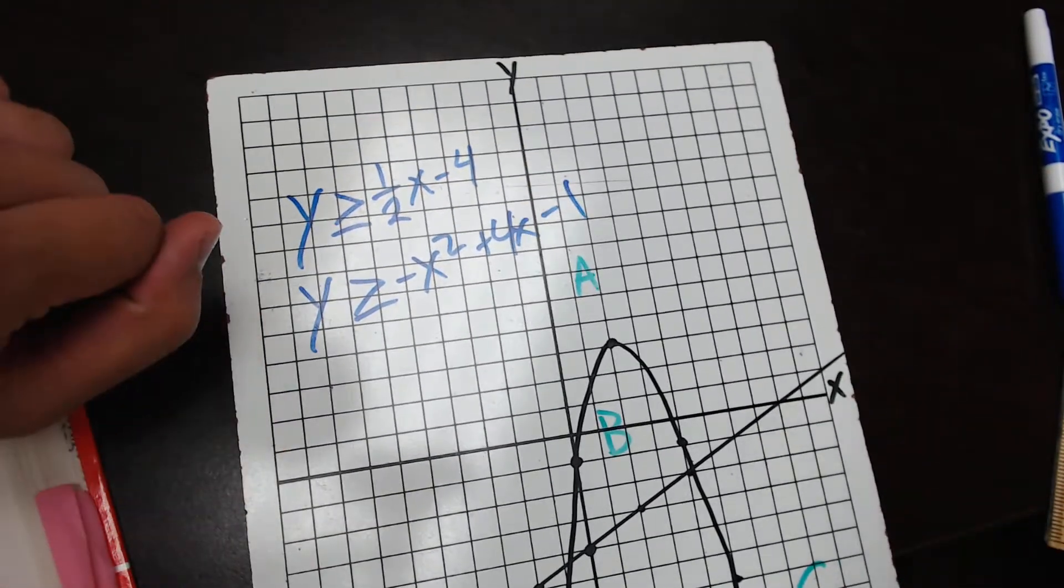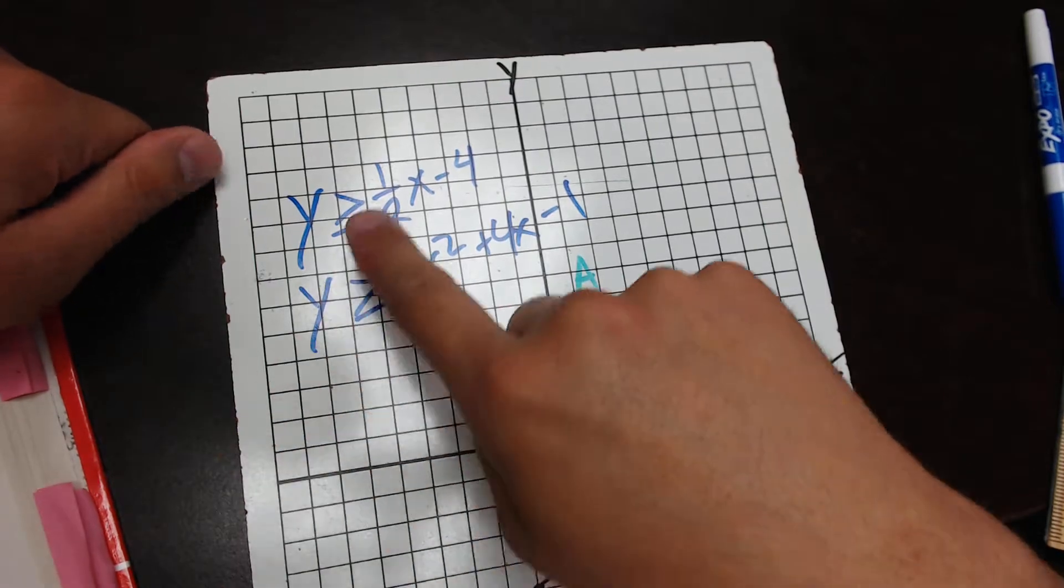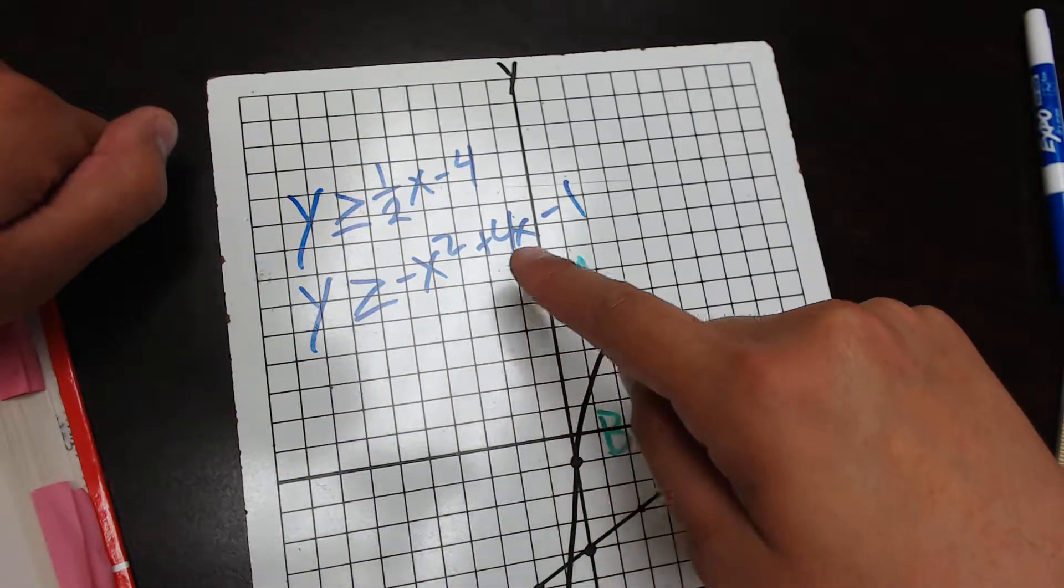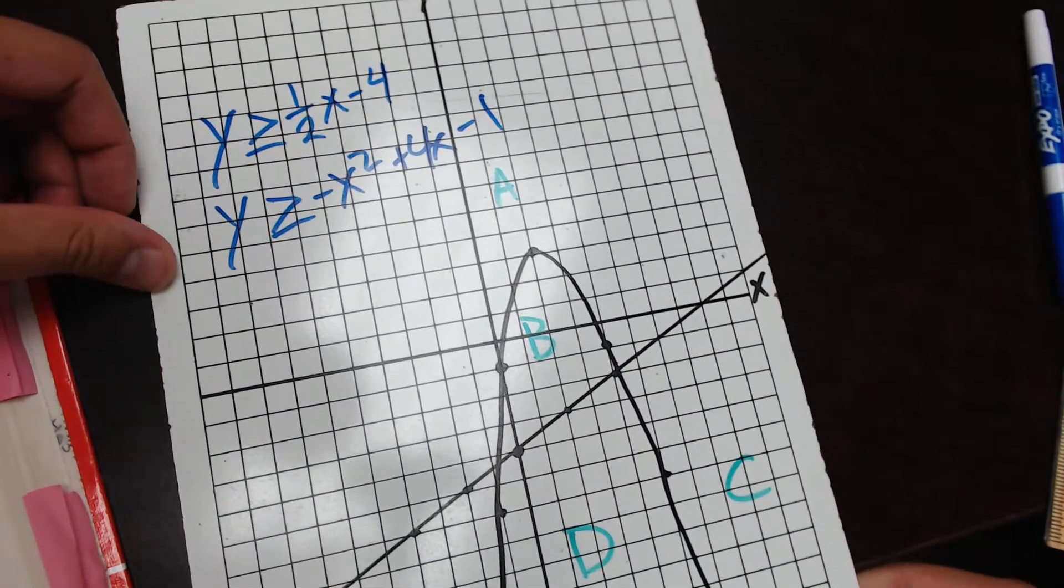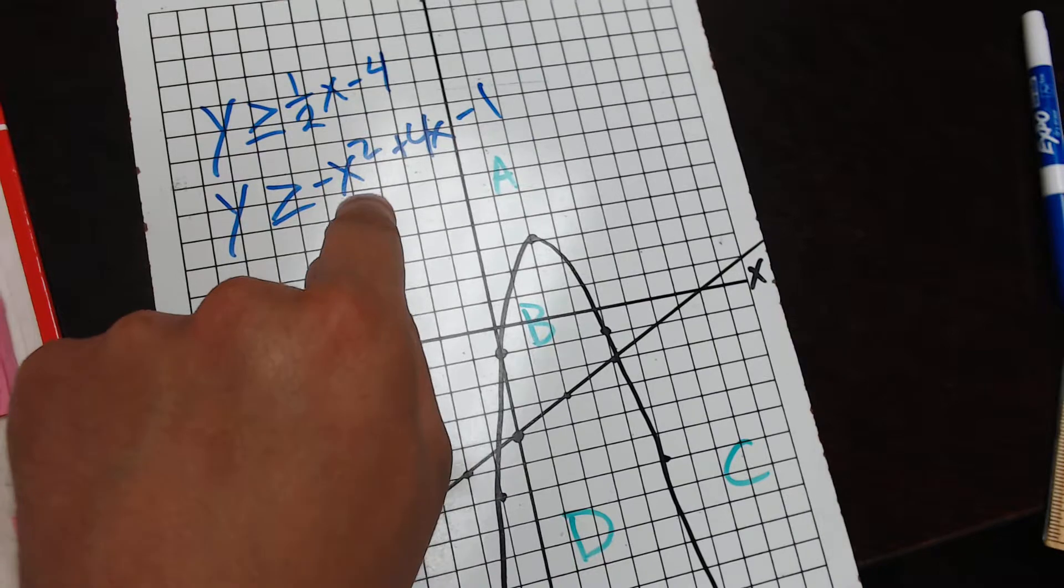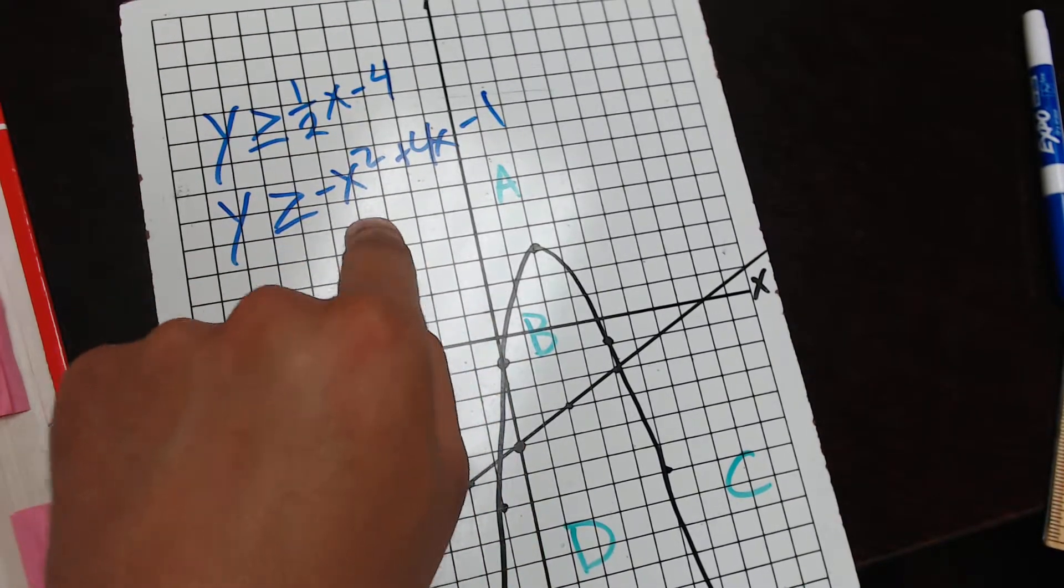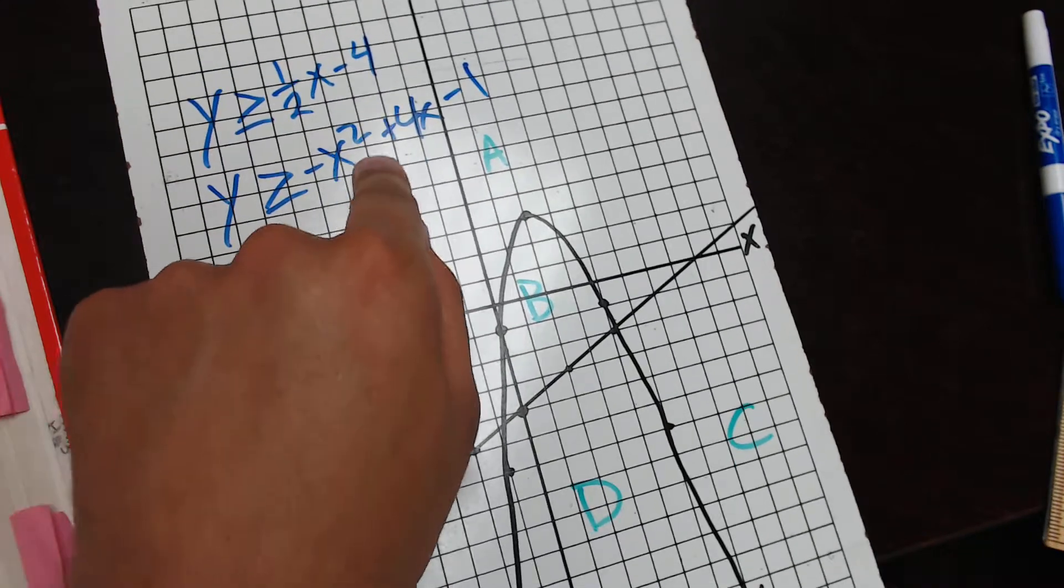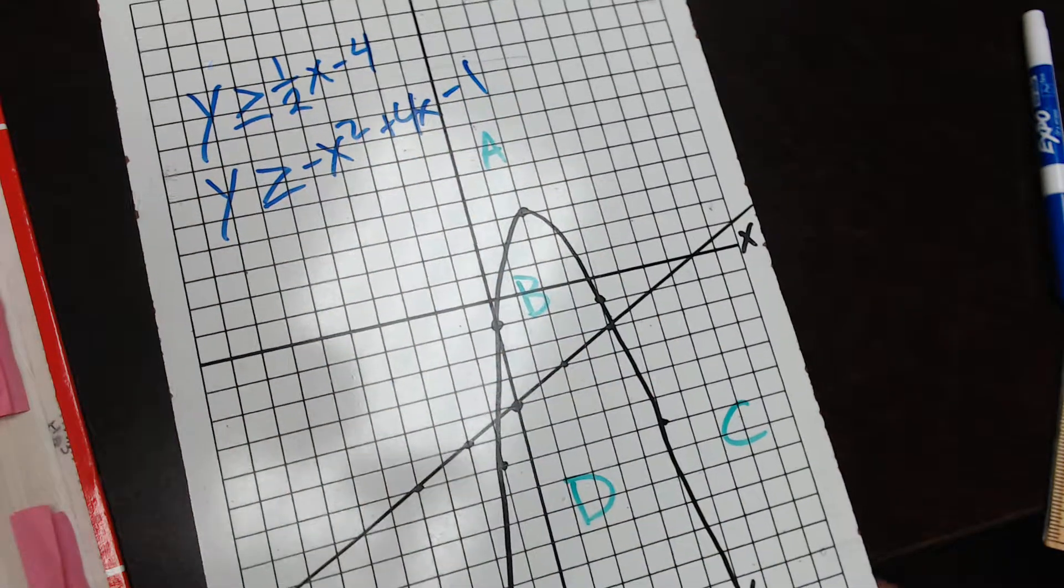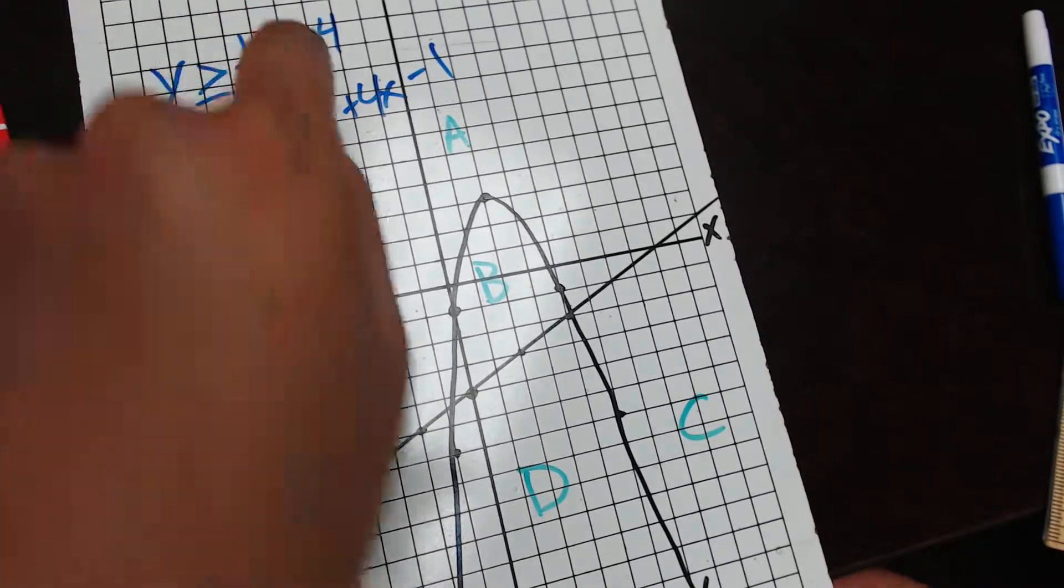So the two inequalities that we're dealing with here are y greater than and equal to one-half x minus 4, and y is greater than and equal to negative x squared plus 4x minus 1. Now, just judging by these equations, we know that this x squared equation is going to be the curvy line because straight lines don't have exponents. So we already know that this x squared version is going to be this sad face parabola, right? And then we know that this one is going to be the straight line.